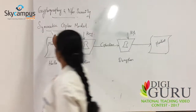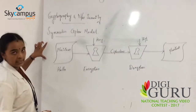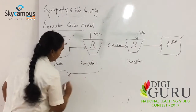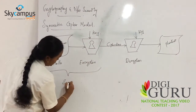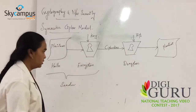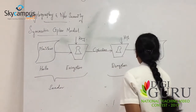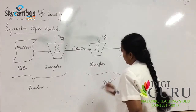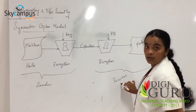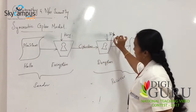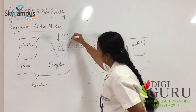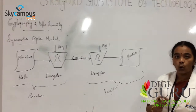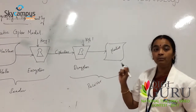Where does the Symmetric Cipher Model work? It works on both sides — the Sender side and the Receiver side. Both sides use the same key, which is why it is called the Symmetric Cipher Model.